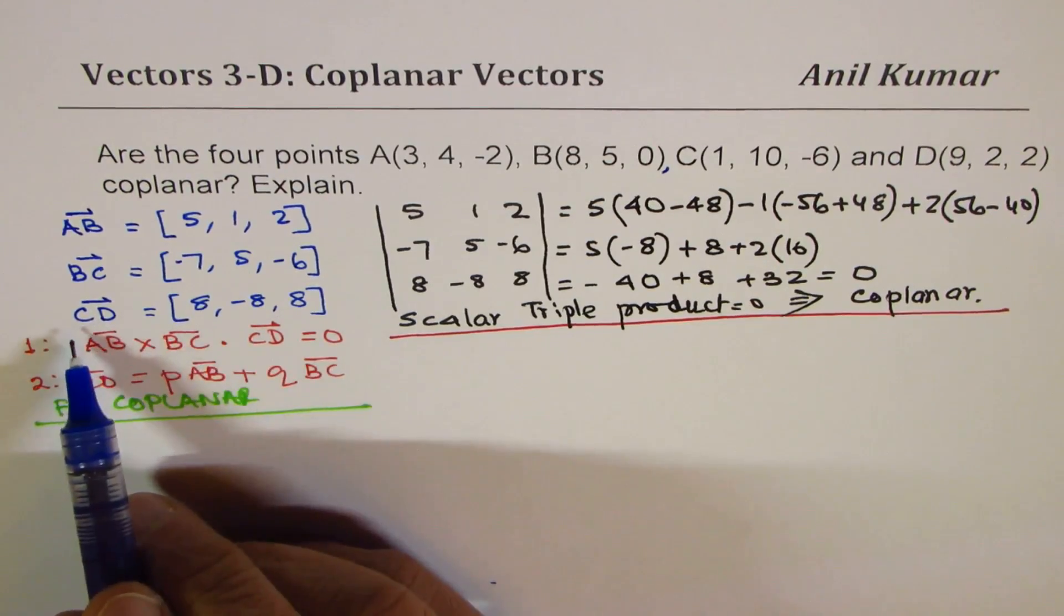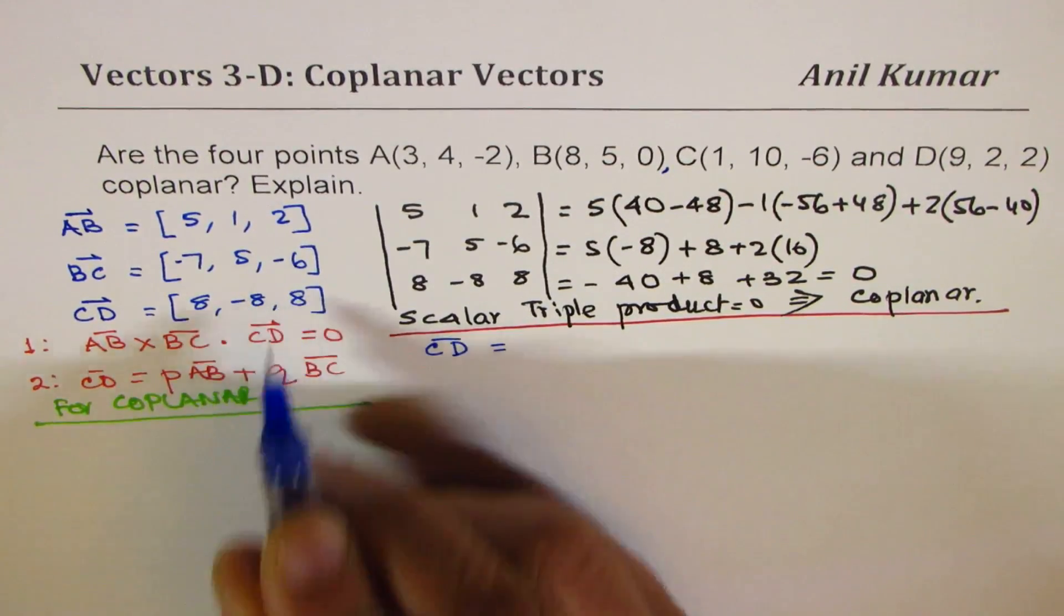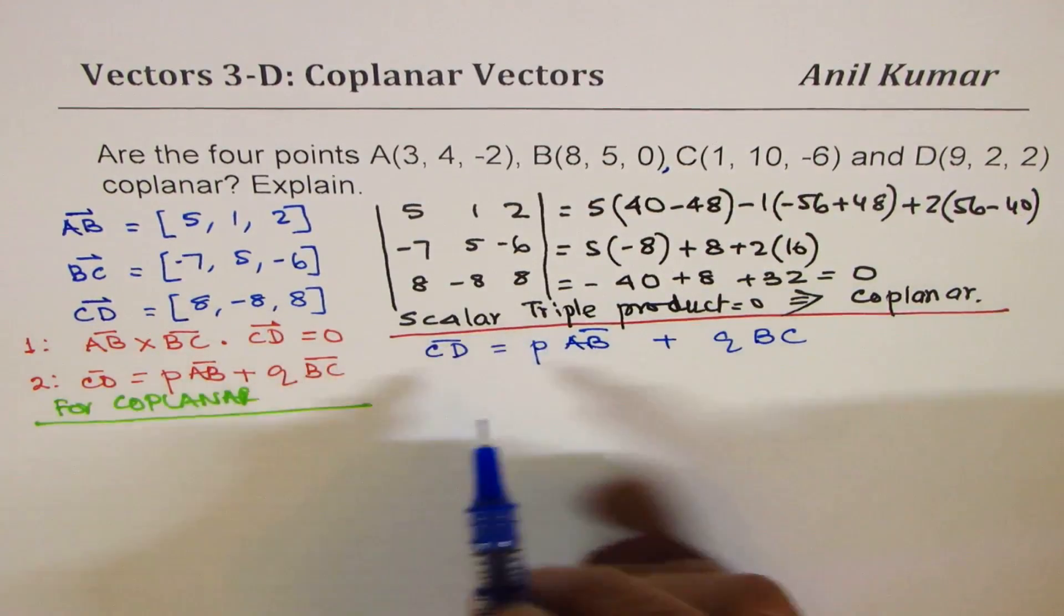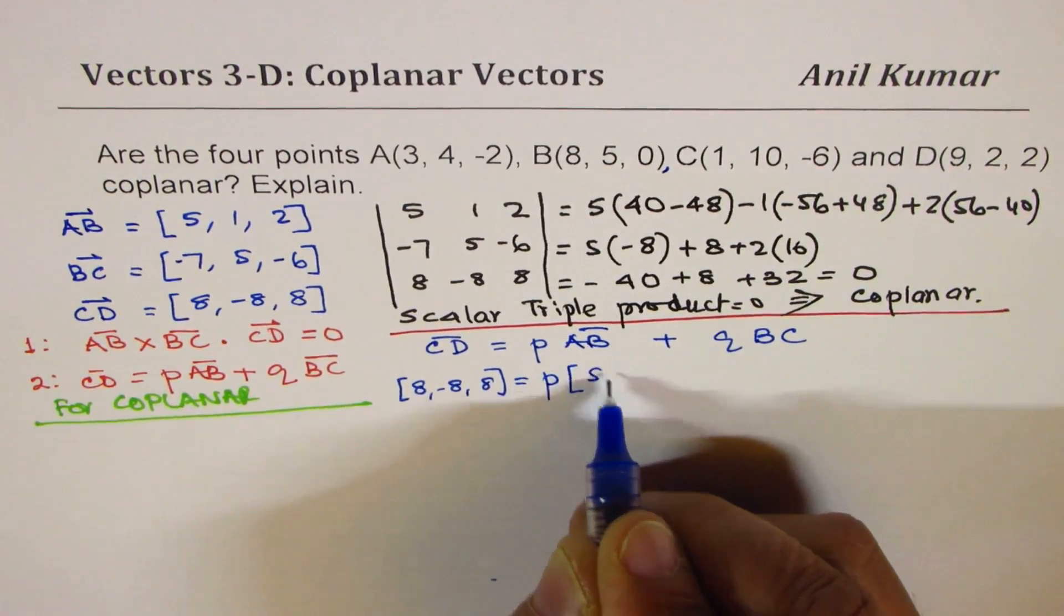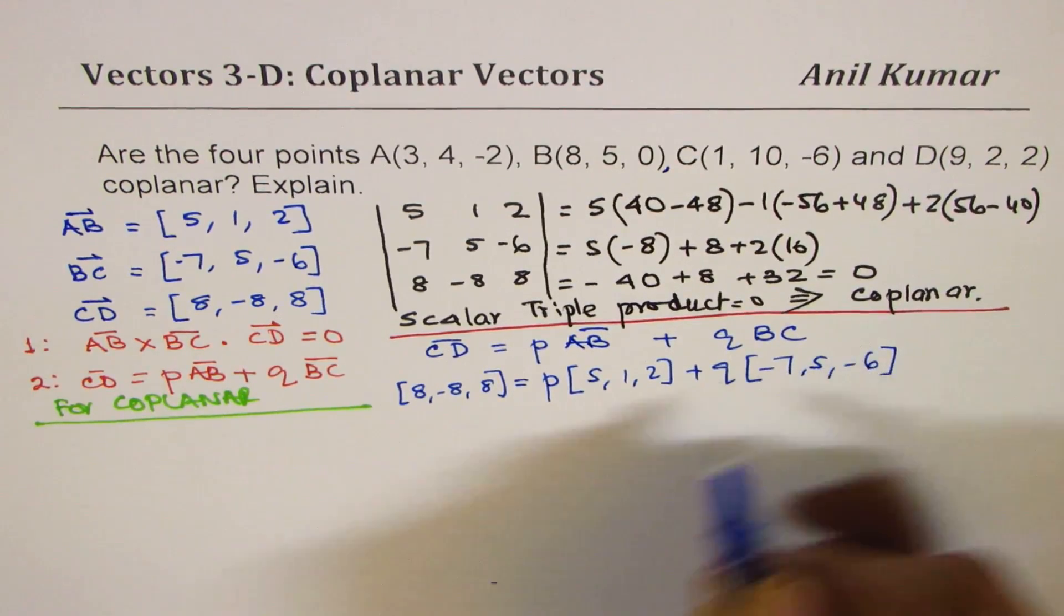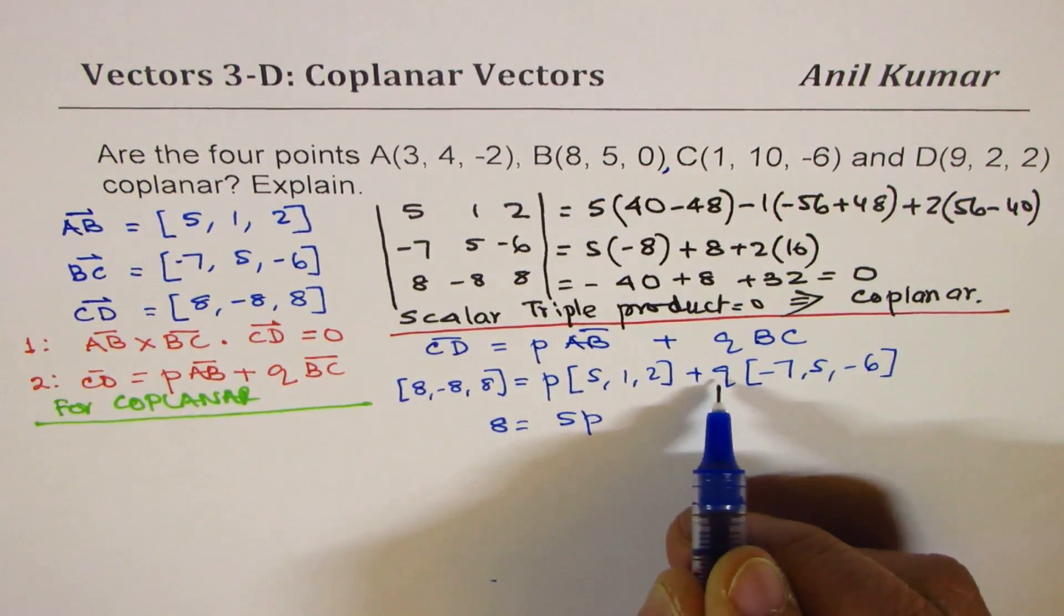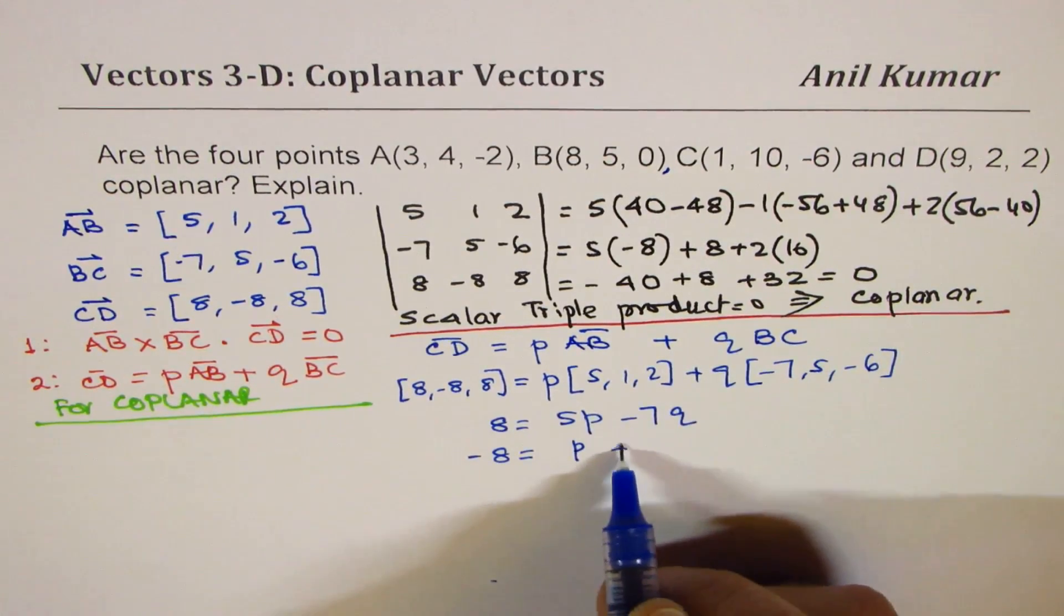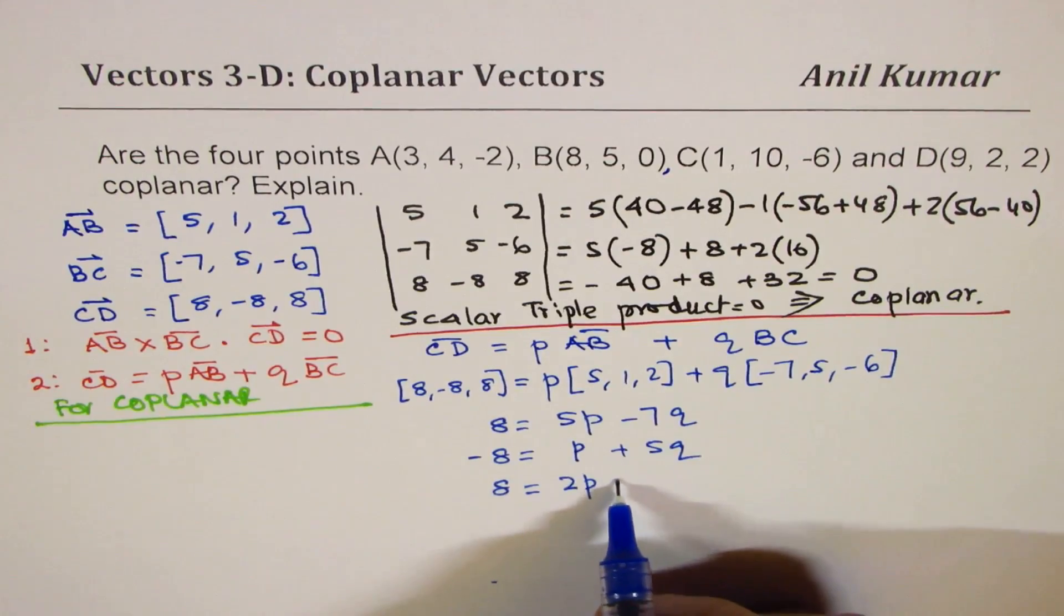What I will do now is write vector CD as a combination of the other two. We will try to prove if we could write vector CD as combination of AB and BC. So we have (8, -8, 8) equals P times (5, 1, 2) plus Q times (-7, 5, -6). If you compare, we get 8 = 5P - 7Q, -8 = P + 5Q, and 8 = 2P - 6Q.